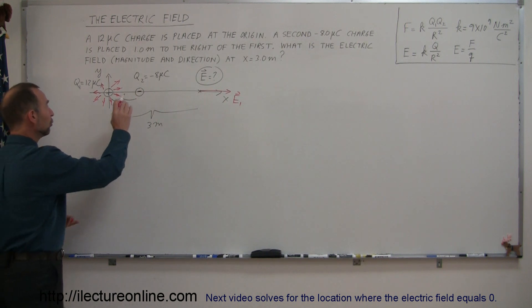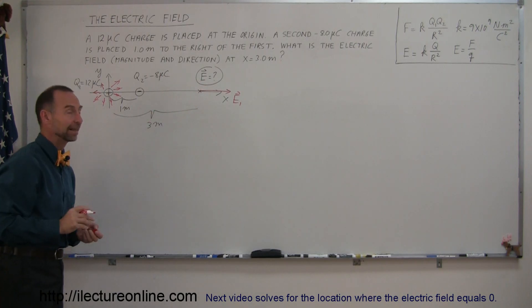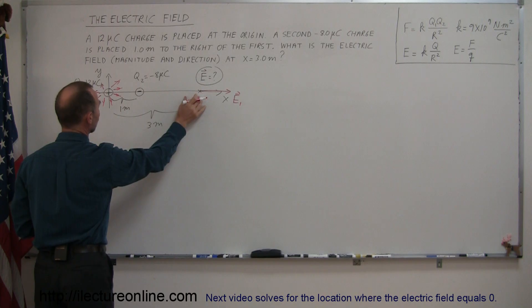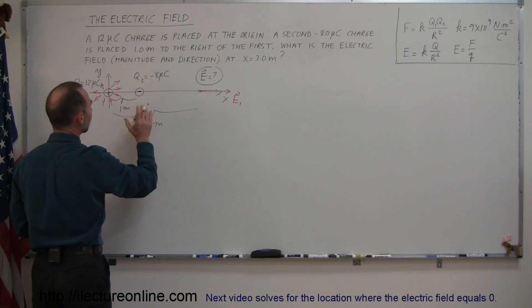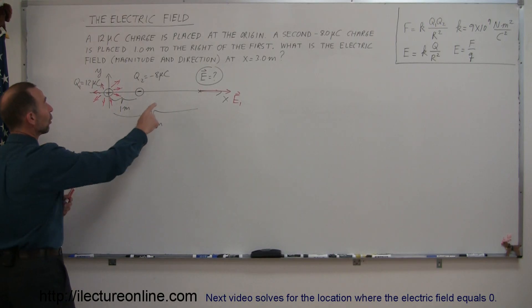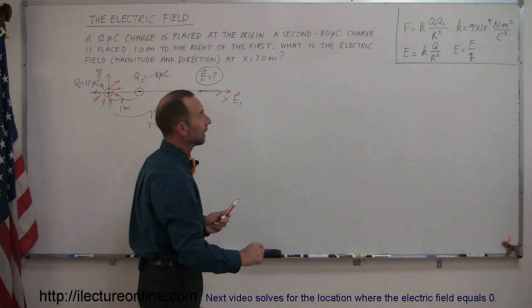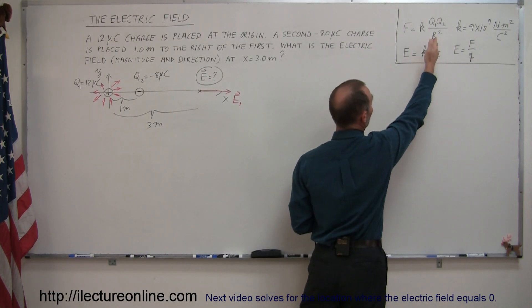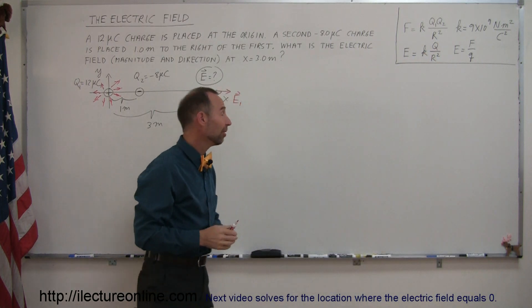Now q2 will also cause electric field to exist at that location. Since q2 is significantly closer than q1, I would assume the electric field strength will probably be a little bit bigger even though it's a smaller charge. But remember the electric field strength is inversely proportional to one over r squared. Distance is important here.